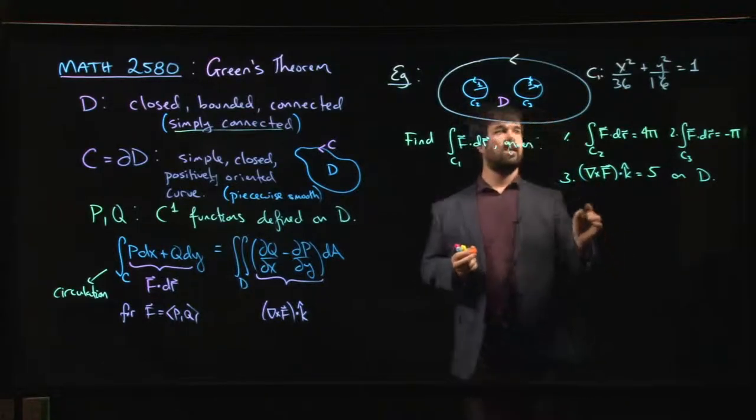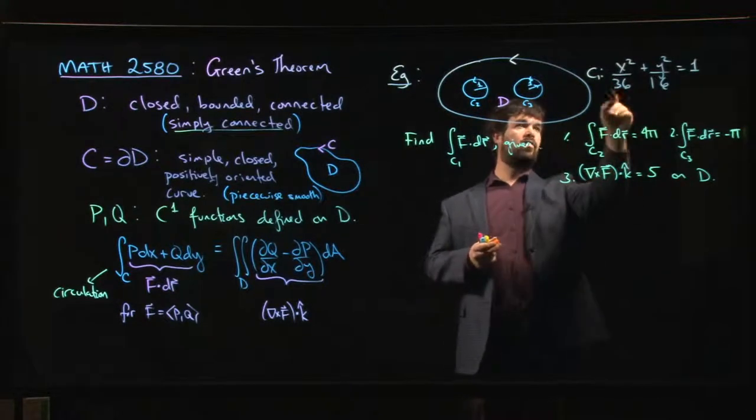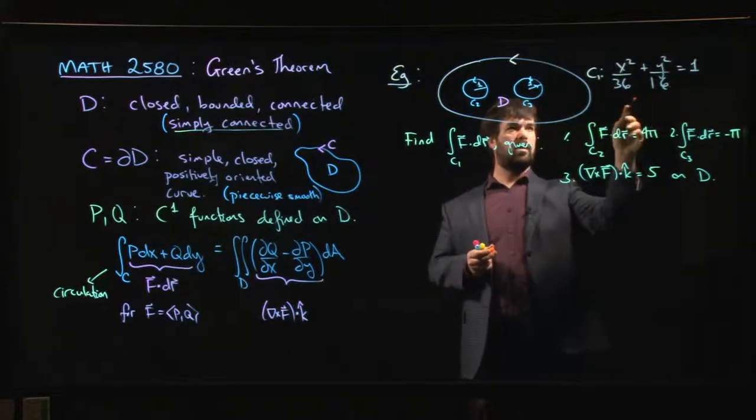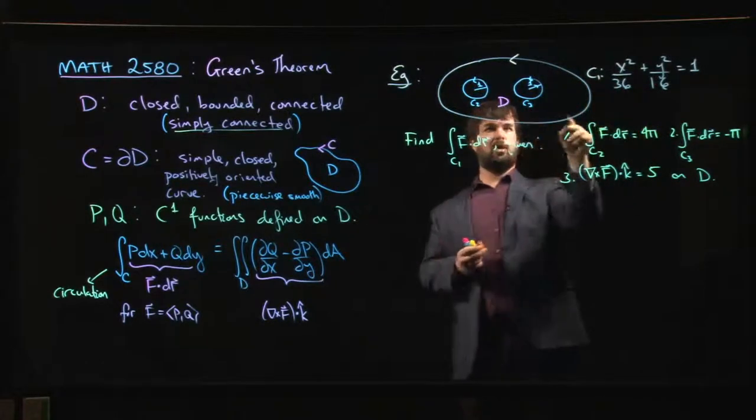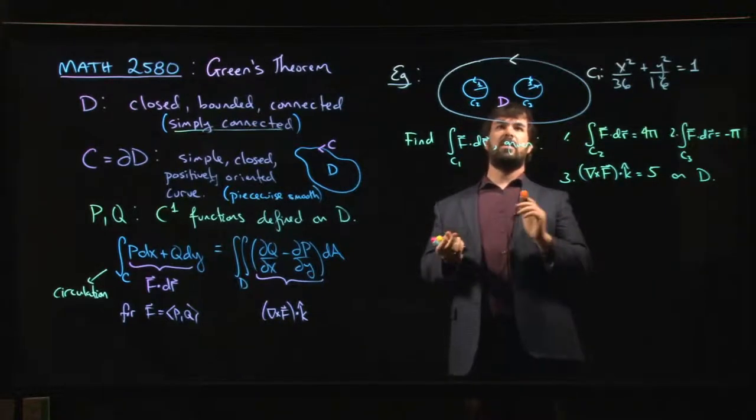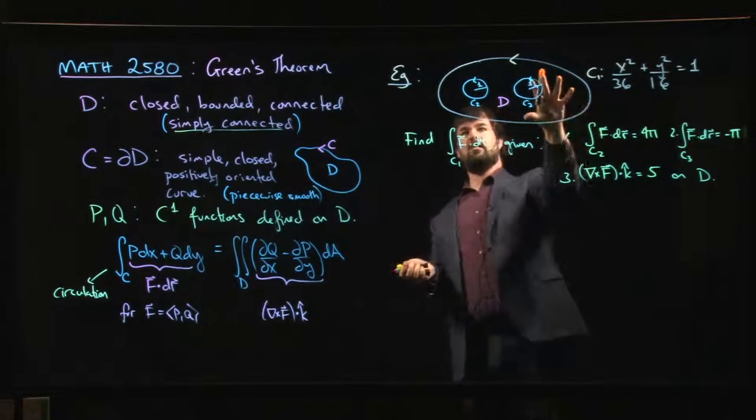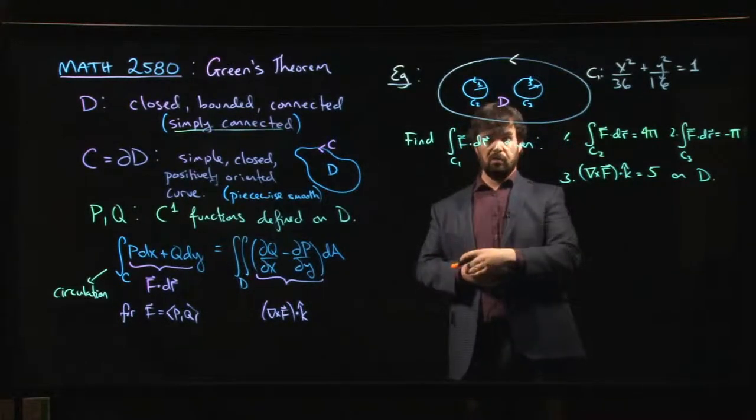So C1, the first curve, is this ellipse given here. x squared over 36, y squared over 16 equals 1. So 6 squared, 4 squared with the positive orientation.